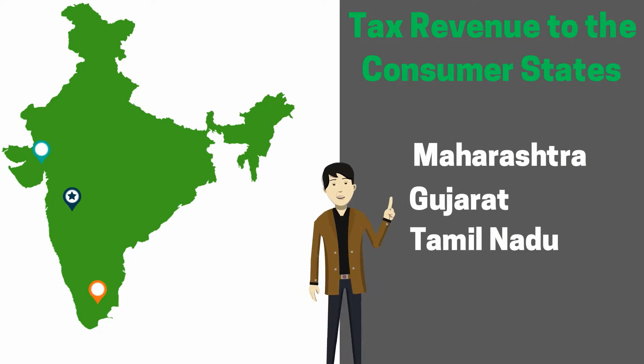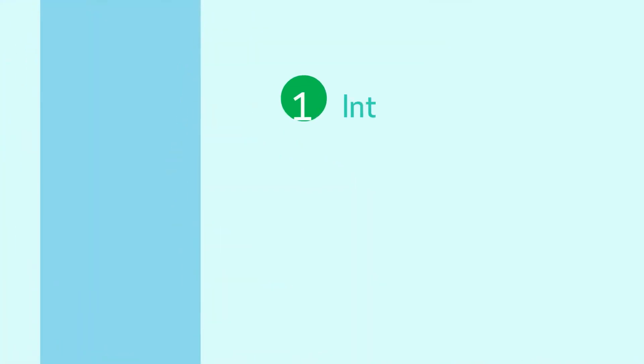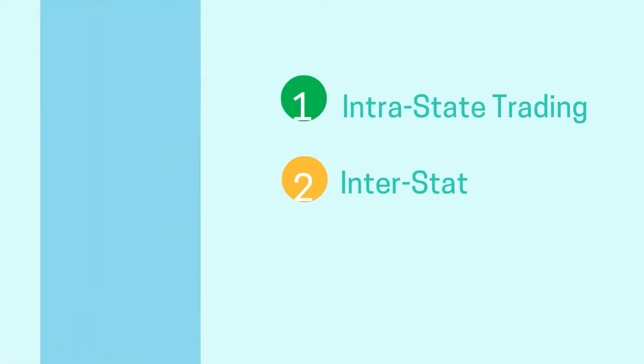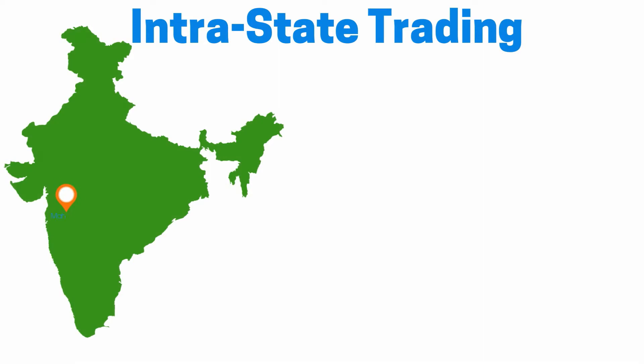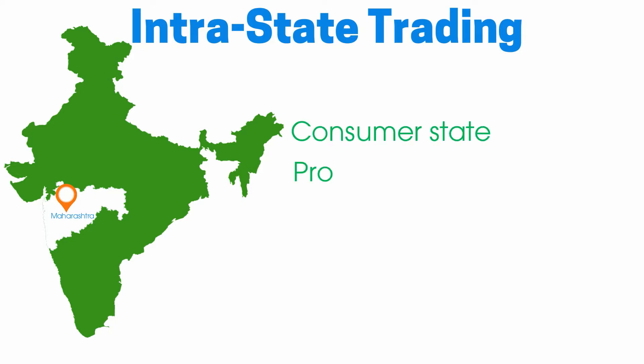Let's discuss a few examples to determine where the tax will be collected in different scenarios like intrastate trading, interstate trading, and imports and exports. In example number one, we'll discuss intrastate trading. If a manufacturer is based in Maharashtra and he sells his goods to a person also located within the boundaries of Maharashtra, then Maharashtra will collect the taxes on such transactions, as it is the consumer state as well as the producer state.